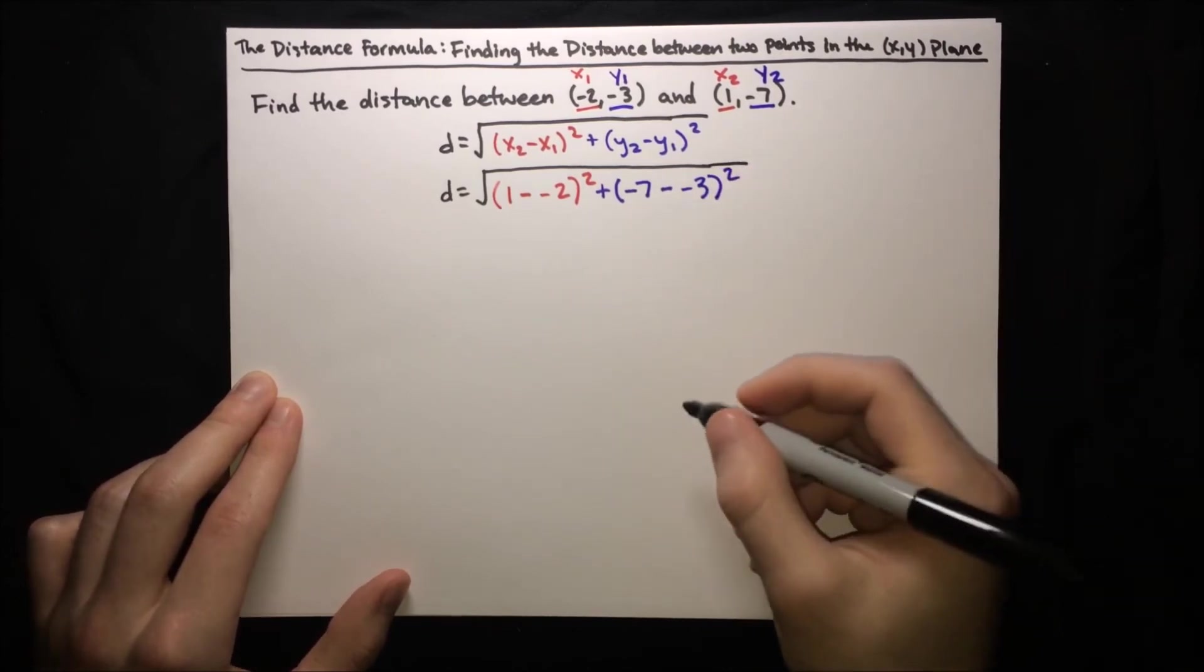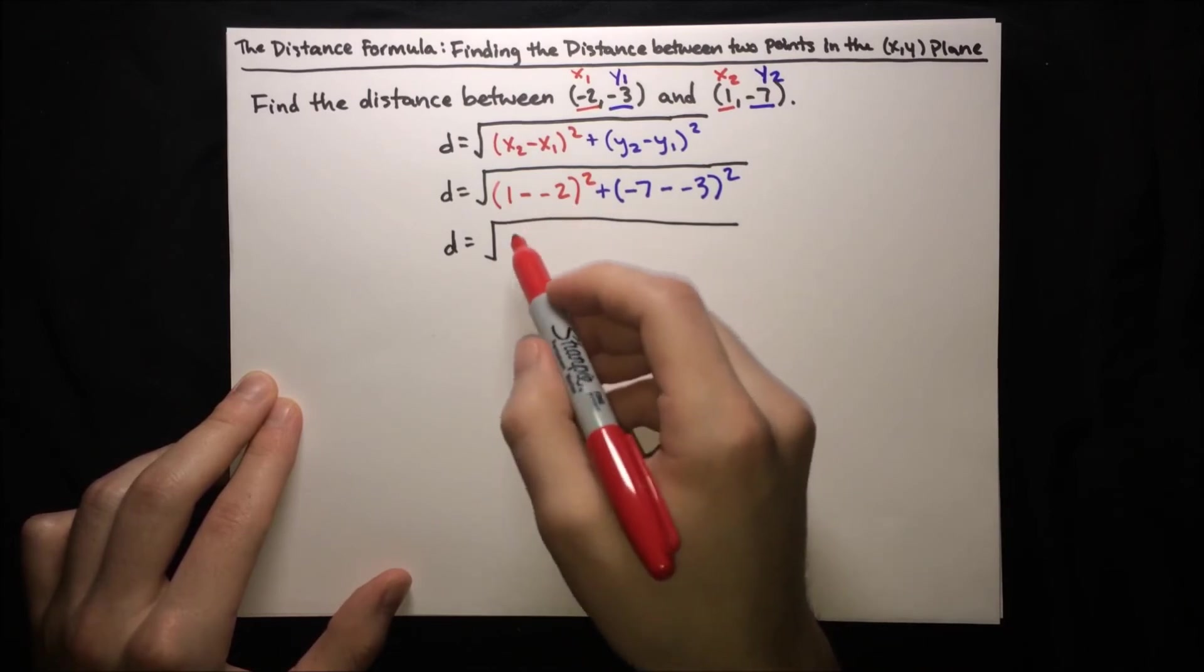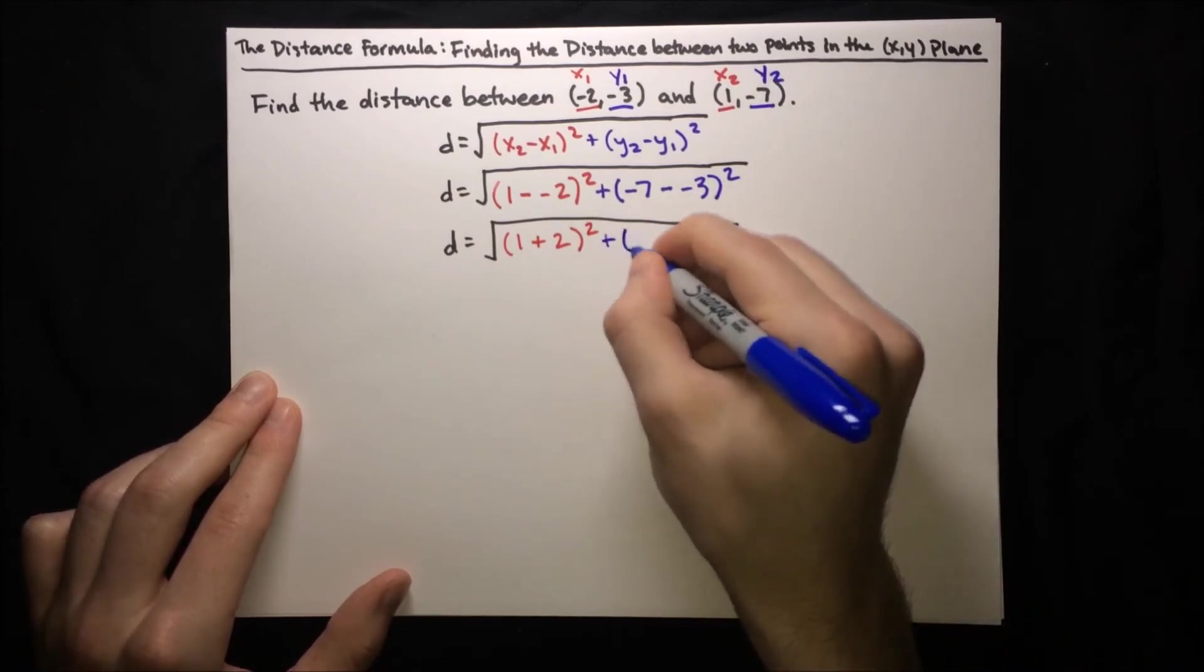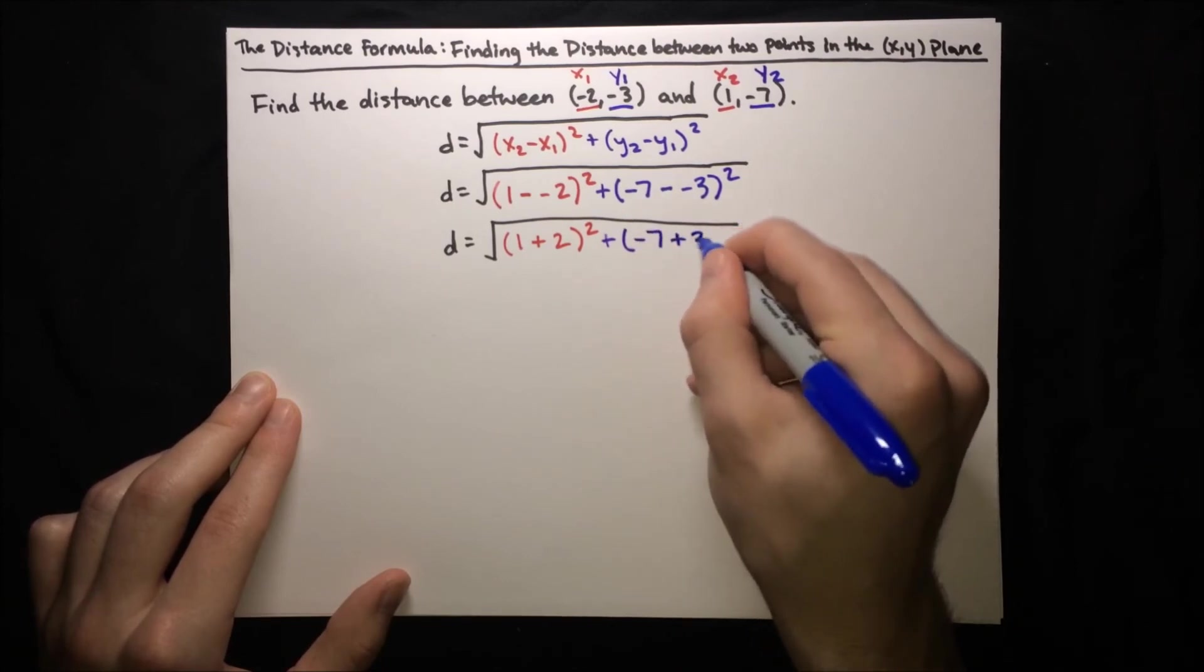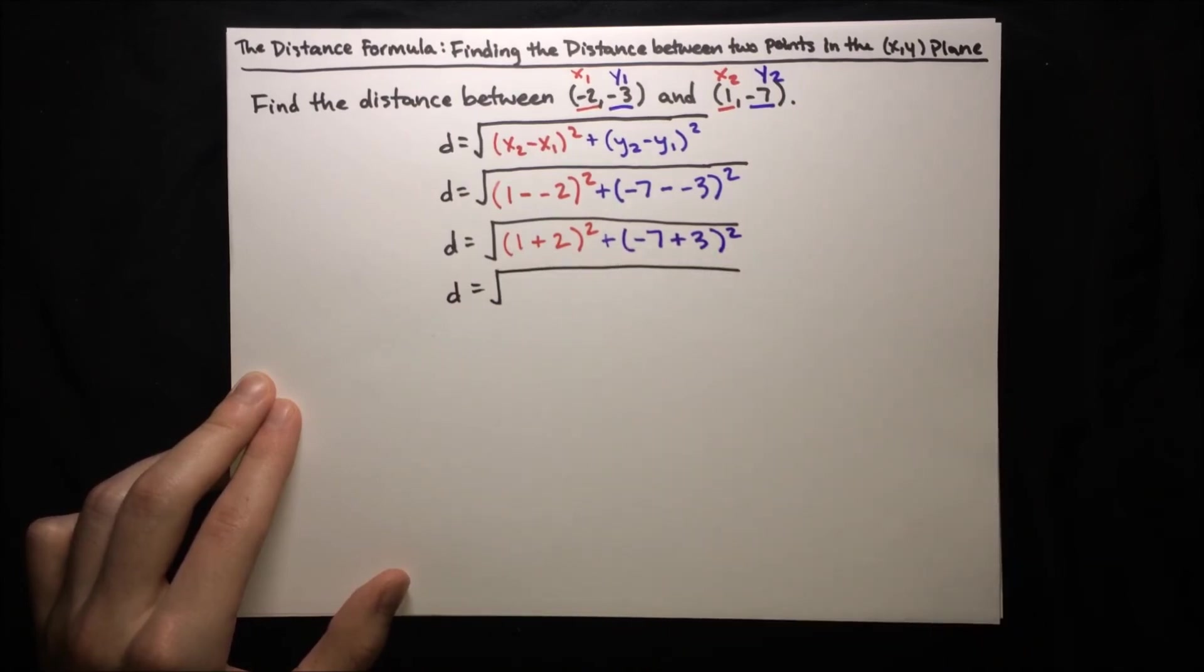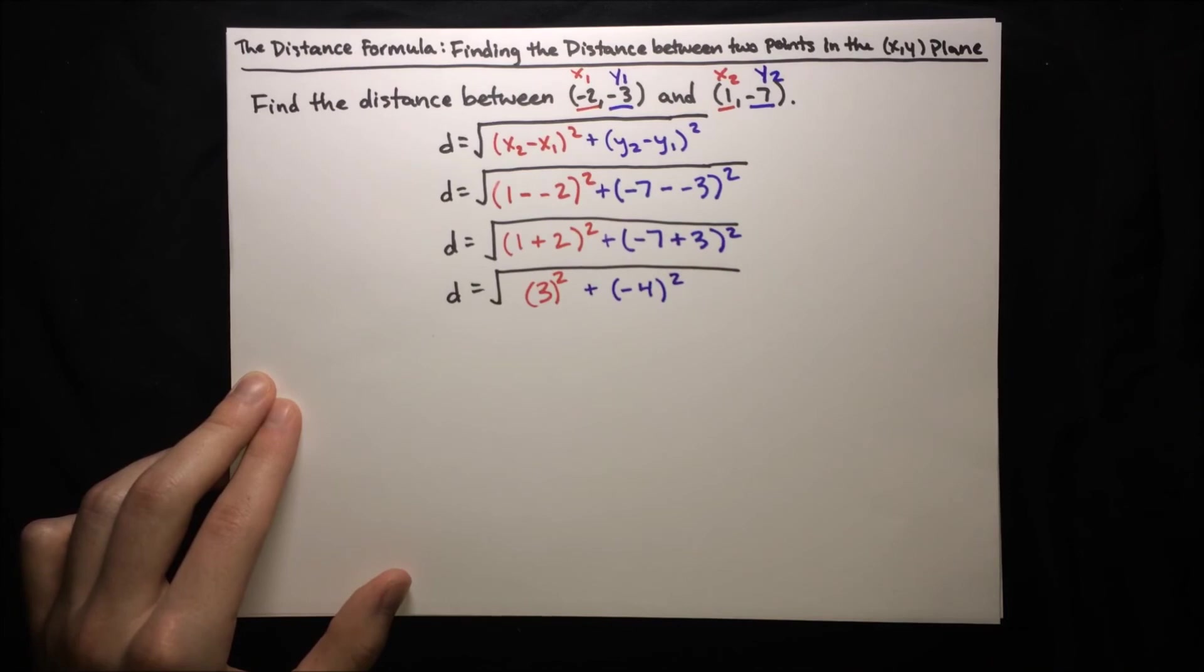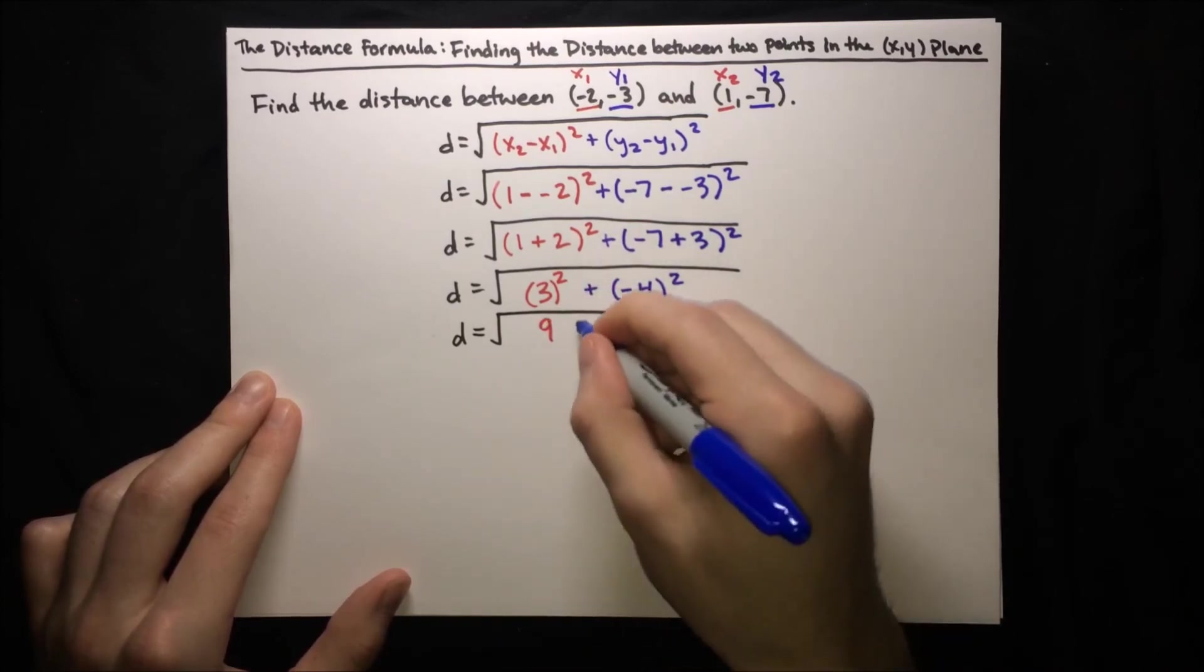Okay. So now this is where you have to be very careful about the negatives. 1 minus negative 2, and it's just the same as 1 plus 2 because the negatives cancel out. So this is really 1 plus 2 squared. And then negative 7 minus negative 3, the same thing happens. The negatives here in a row cancel out, but we've still got a negative on the 7. So this is really negative 7 plus 3 squared. And now we can go ahead and compute without paying as much attention because the double negatives are taken care of. 1 plus 2 is just 3, and then we're going to square that. And then negative 7 plus 3 is just negative 4, and we're going to square that also. And we'll go ahead and do the squaring. So d equals root of 9 plus 16.